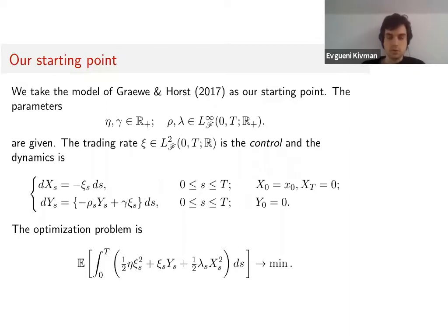The last term is the market risk. Lambda is the market risk aversion parameter. We want to minimize this cost, and this problem is already solved, but we're interested in the behavior if η is going to zero—if the instantaneous price impact parameter is small.